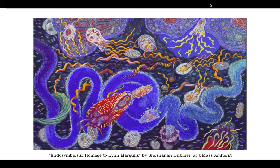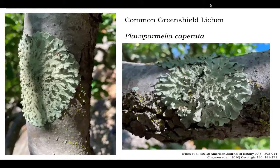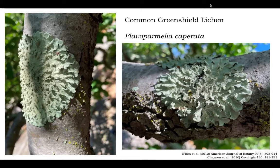Where does an individual begin and end? Here we have what we would consider to be a lichen individual. The round structure that you see is the thallus, which is the growth of the lichen. This is Flavoparmelia caporata, or the common green shield lichen, which is growing on an apple tree in my own backyard. And I wanted to start at this broadest idea of interkingdom interactions, which is the lichen and its substrate.